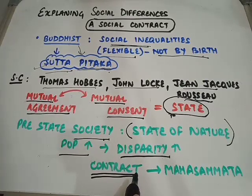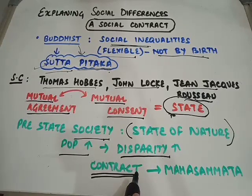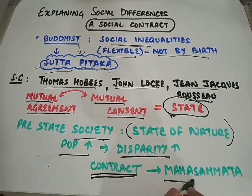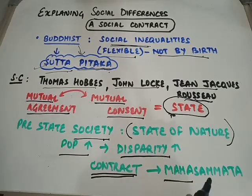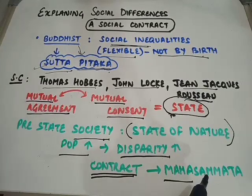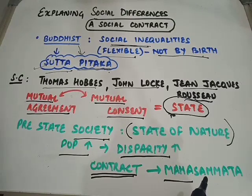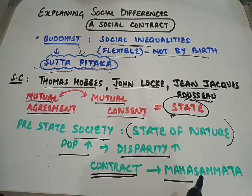So the ruler who was chosen by the people out of their own will came to be known as the Maha Samta. You can see the word 'samta' as related to 'sehmati' and 'samjhauta' (agreement and compromise). The literal translation of Maha Samta is 'the great elect.'